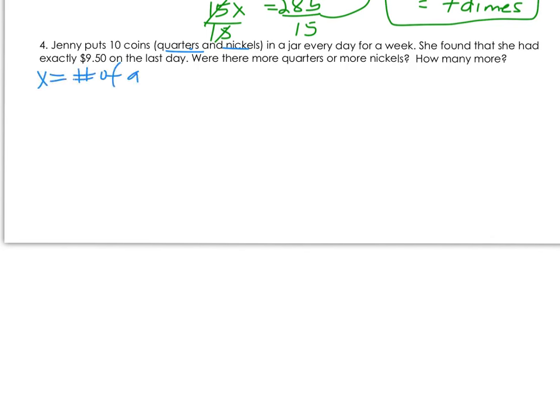We need two equations for our system. It says Jenny puts 10 coins in a jar every day for a week. We've got to think about this. How many days are there in a week? There are seven days. If Jenny puts in 10 coins every day for seven days, how many coins would there be total? 10 times 7 is 70. That's comprised of quarters and nickels, so if we add the two types together, there should be a total of 70 coins.